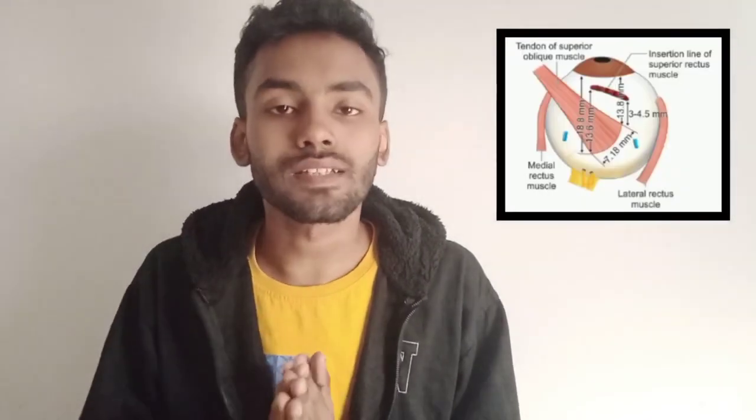After originating from the body of the sphenoid, the superior oblique muscle reaches the trochlea. The trochlea is a cartilaginous pulley attached at the fovea trochlearis on the undersurface of the frontal bone. After reaching the trochlea, the superior oblique muscle turns posterolaterally and inserts onto the sclera at a particular distance from the limbus.